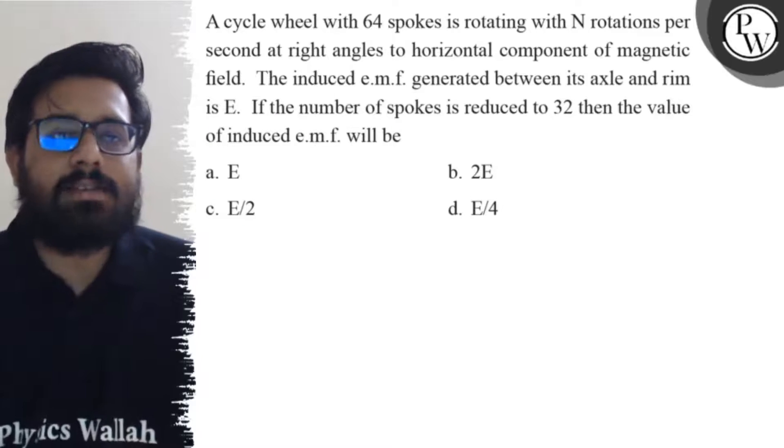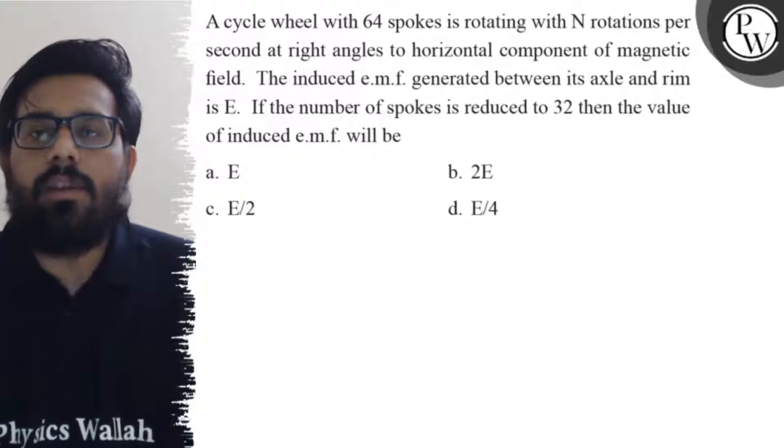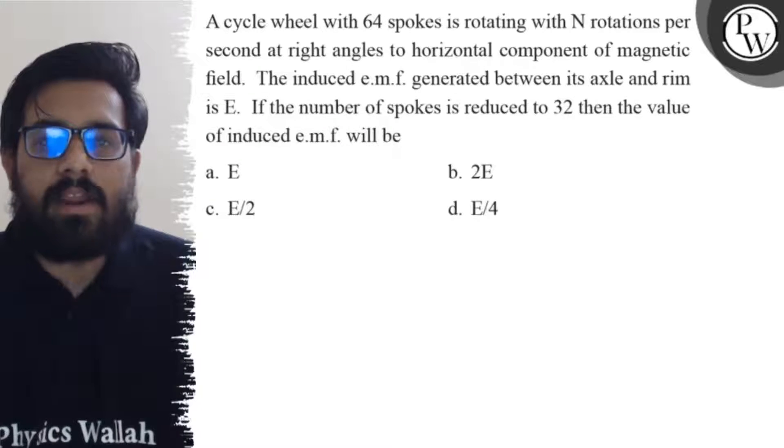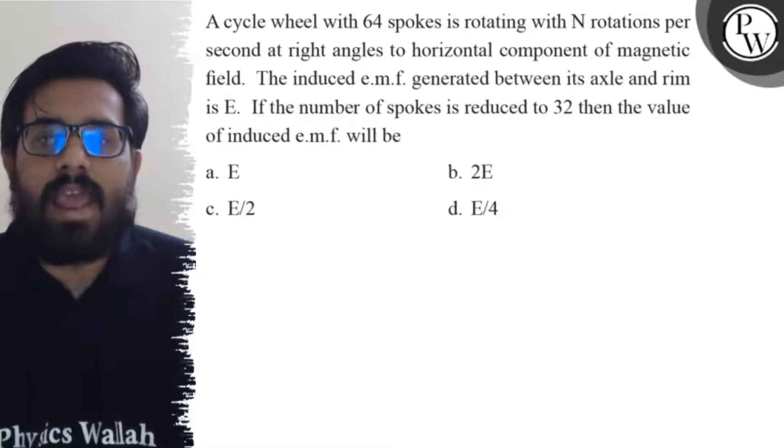Hello students, let's see the question. A cycle wheel with 64 spokes is rotating with N rotations per second at right angles to horizontal component of magnetic field. The induced EMF generated between its axle and rim is E.